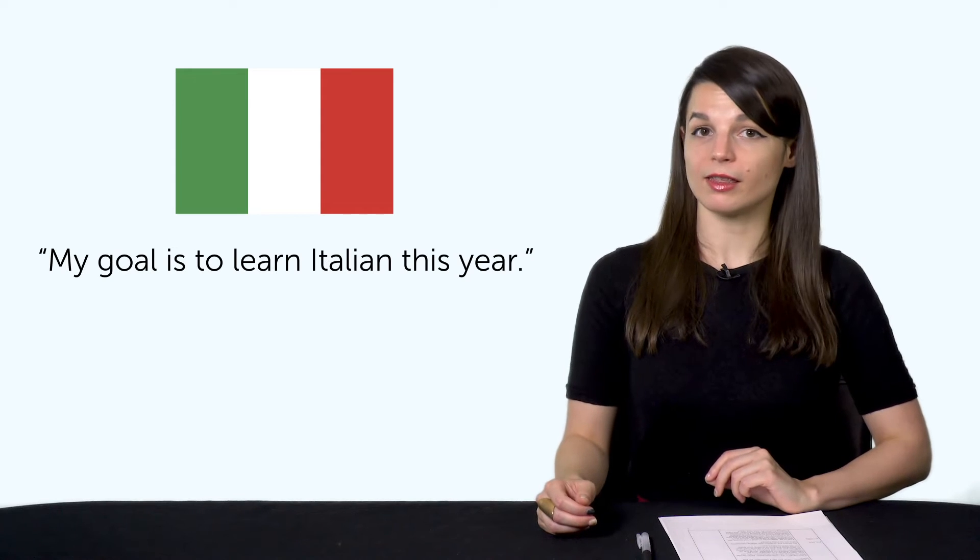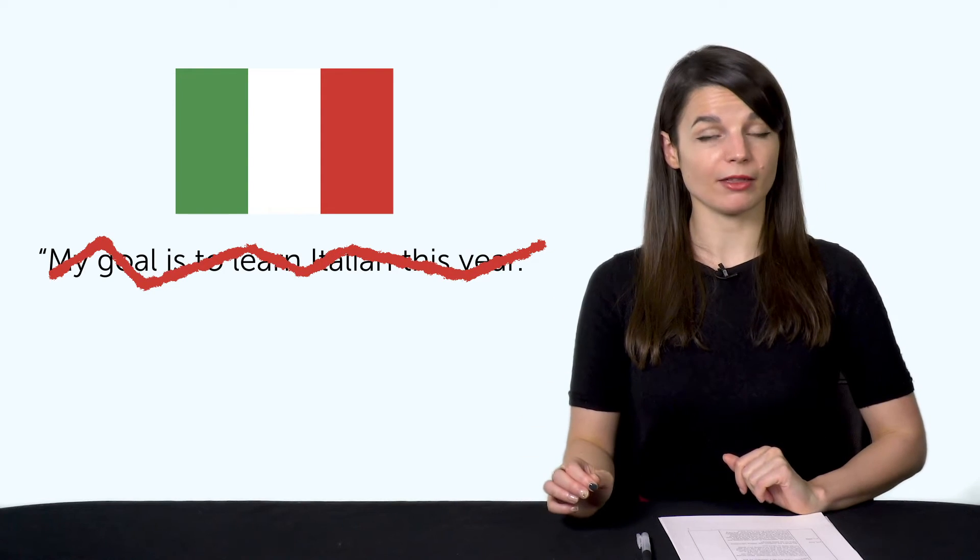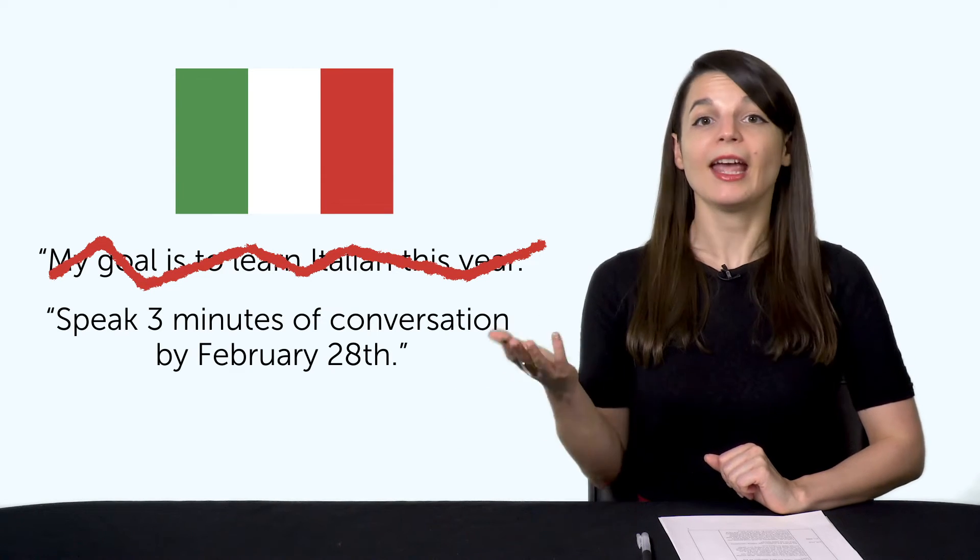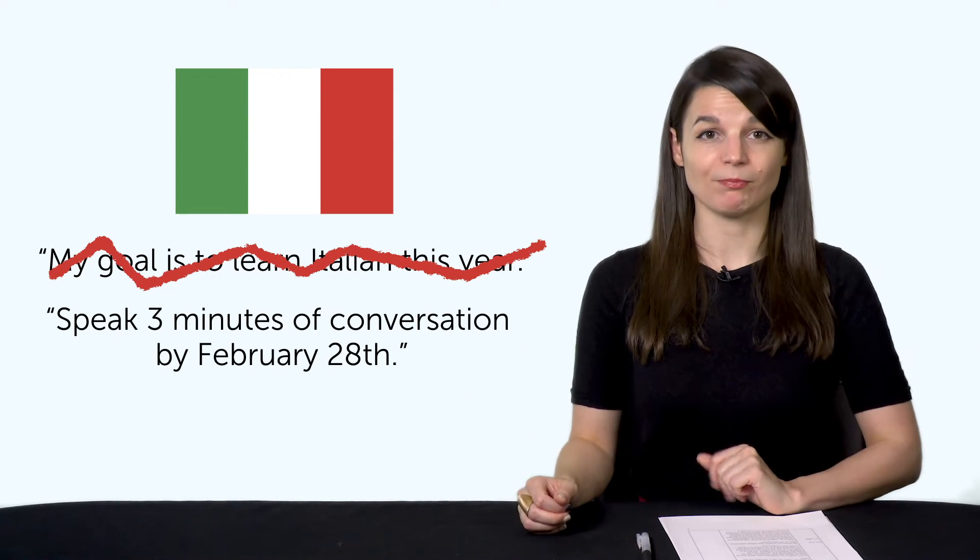For example, let's say you're learning Italian this year. Instead of saying, my goal is to learn Italian this year, set a specific, measurable, realistic goal for the month. Like, speak three minutes of conversation by February 28th. And you can also set a yearly goal, like 30 minutes of conversation, and work towards that. The whole point is, three minutes is measurable.